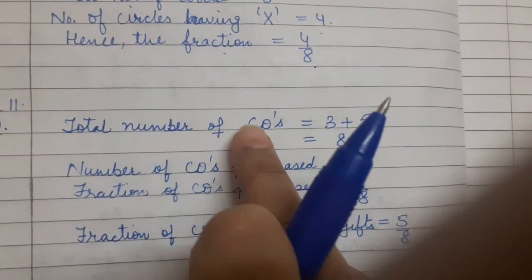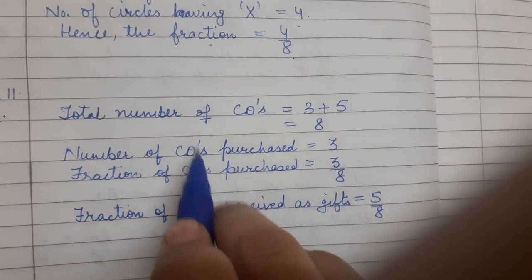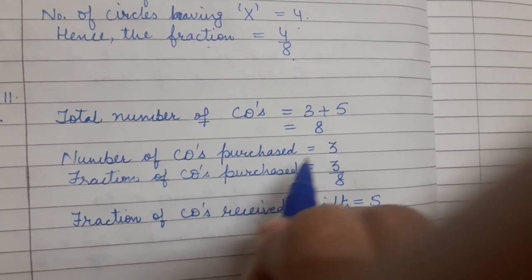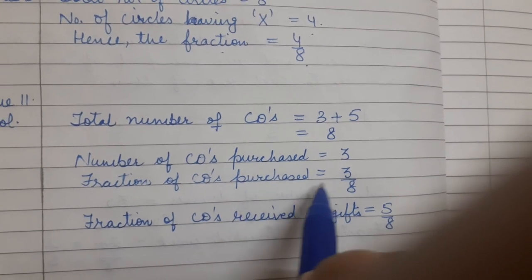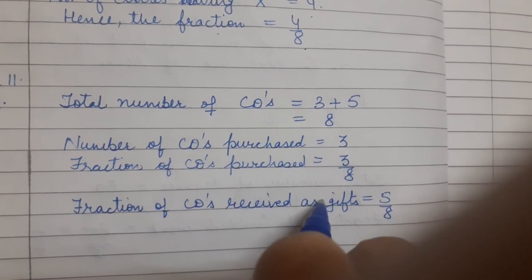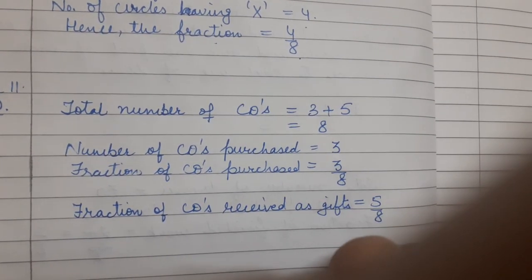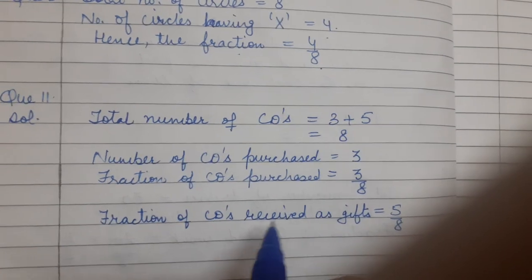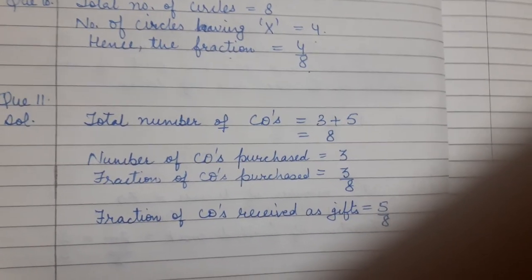Now fraction of CDs received as gift: she got 5 as gift, so 5 by 8. So that's all for the day. Complete exercise 7.1 in your notebooks. Thank you and have a nice day.